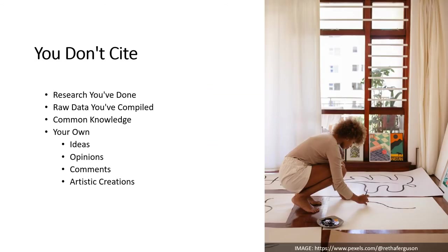There are some things that you don't need to cite. That includes research and raw data that you've compiled yourself, like when you do a scientific study or survey, and common knowledge for the audience or field you're writing for. This can include things like facts, historical notes, or general knowledge. You also don't need to cite your own ideas, opinions, or comments, as long as that information has not appeared elsewhere before.